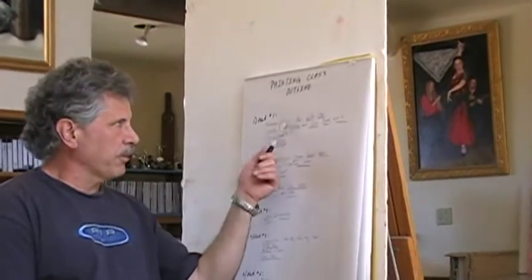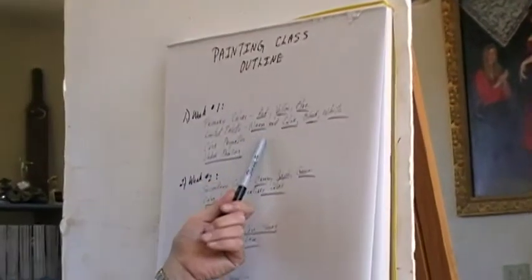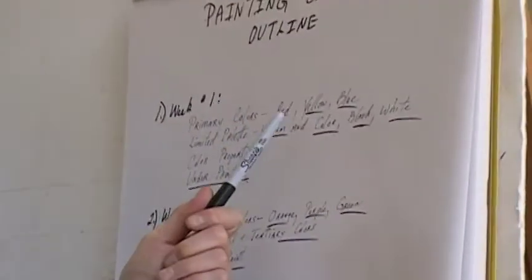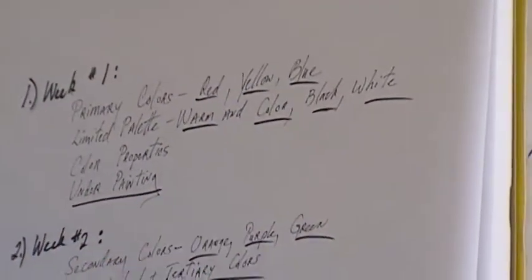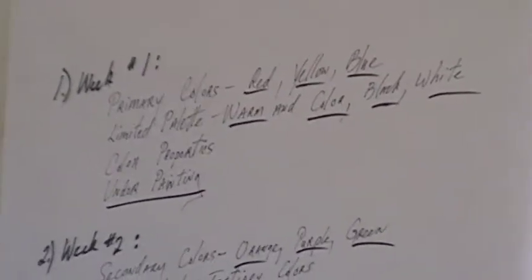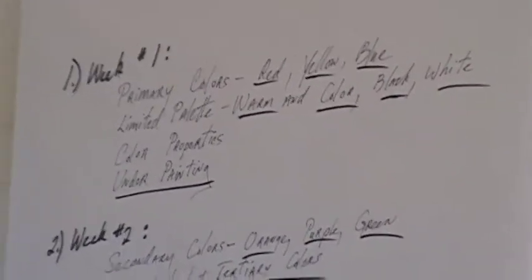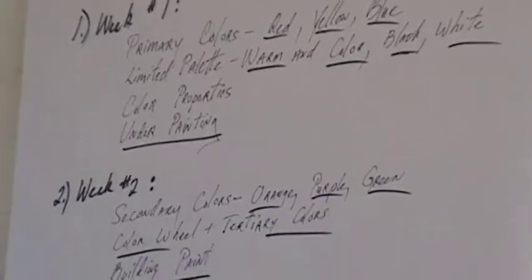Today we're going to talk about primary colors - red, yellow, and blue - and a limited palette using a warm version of each one and a cool version, and black and white. So we're talking about not using more than eight colors to create all the colors we need.